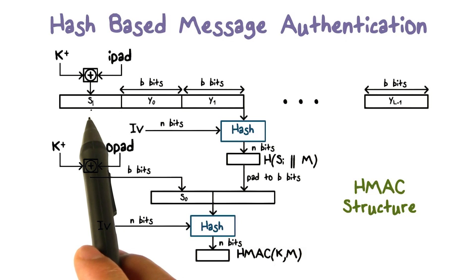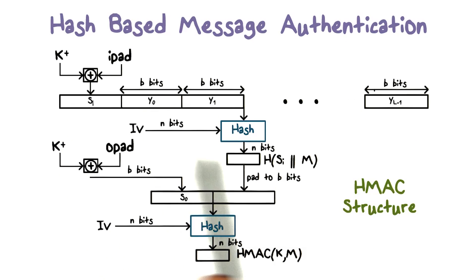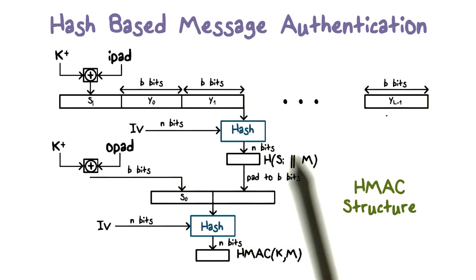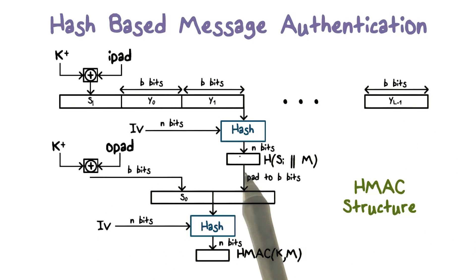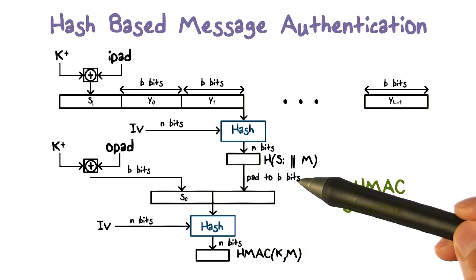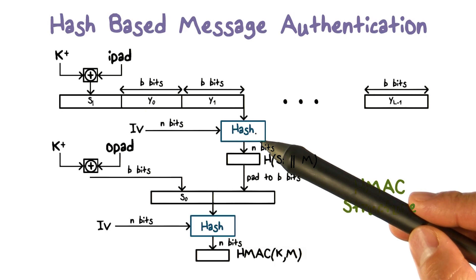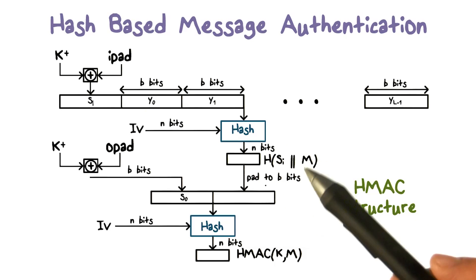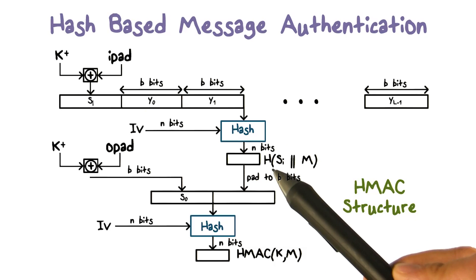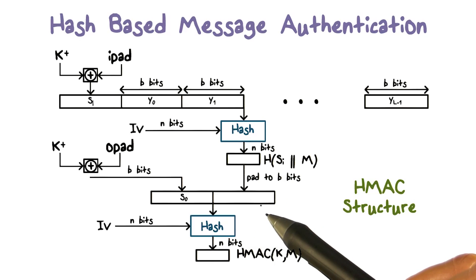S1 is prepended to the original message. Then the entire message — that is, S1 and the original message — is hashed to produce an N-bit hash value. For example, if the hash function is SHA-512, then N will be 512. The N-bit hash value is then padded to B bits.